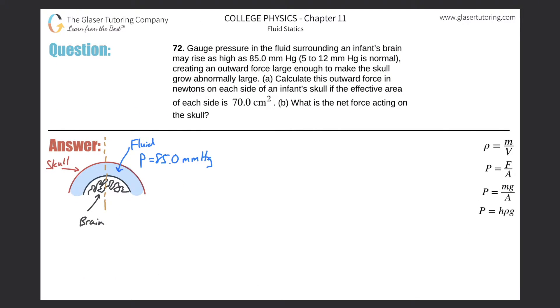Number 72: Gauge pressure in the fluid surrounding an infant's brain may rise as high as 85 millimeters of mercury. 5 to 12 millimeters of mercury is normal, creating an outward force large enough to make the skull grow abnormally large. Letter A: Calculate this outward force in newtons on each side of an infant skull if the effective area on each side is 70 square centimeters.